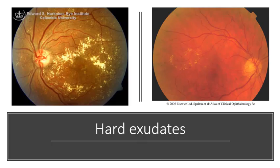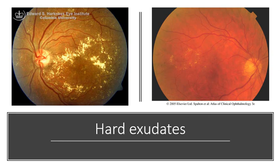Finally, the last sign of background diabetic retinopathy is hard exudates. These are caused by retinal edema and develop at the junction of normal and swollen retina. They're made up of lipoproteins and lipid-filled macrophages, and they are a waxy yellow color with distinct margins, usually arranged in clumps or rings, often surrounding microaneurysms. When leakage stops, they can reabsorb, but this can take months or years.